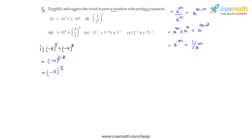We can see that there is a negative sign inside the brackets. Whenever a negative is raised to an odd power, the result will also be negative. So we can finally write this as negative 1 over 4, whole raised to 3. That's how we solve this first problem.